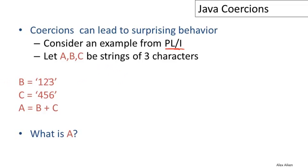So here's an example. We have A, B and C are strings of three characters, so it's important to know here that the length three is part of the type. So B is string 1, 2, 3, C is a string 4, 5, 6, and then A is going to be B plus C. And the question is, what is A?